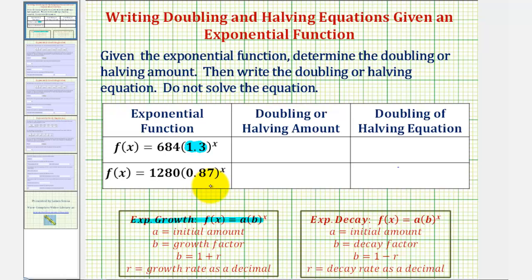Looking at the second exponential function, notice how the base is less than one. It's 0.87. Therefore, we have a decreasing function, and this represents exponential decay, where 0.87 would be the decay factor.